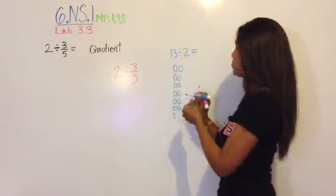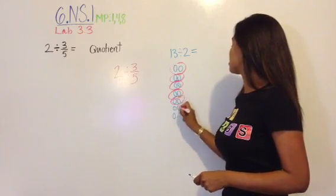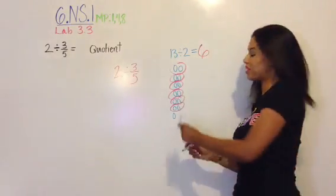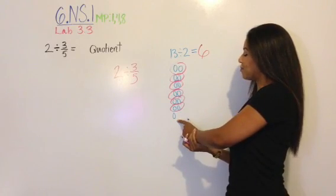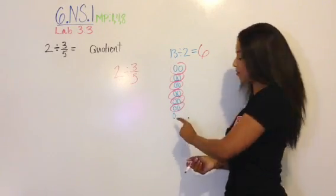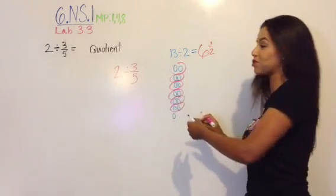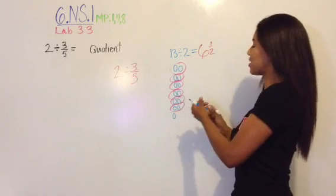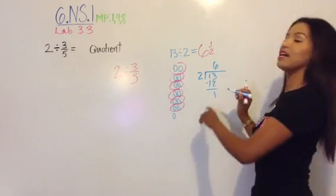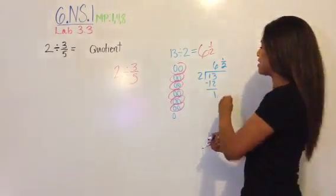How many groups of two are in 13? We've been circling groups of two. There's a group of two, there's a group of two, and so on — until we have just one left. I can't make a whole group. We have six whole groups, but this remainder is part of a group. Since it takes two to make a group, this portion is one out of two, which is half a group. So our quotient is six and a half. This conceptual model proves why you put the remainder over the divisor — it goes in six full times and there's that half left over.